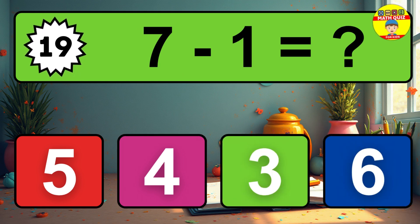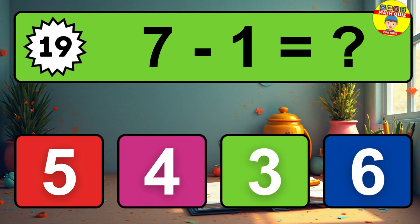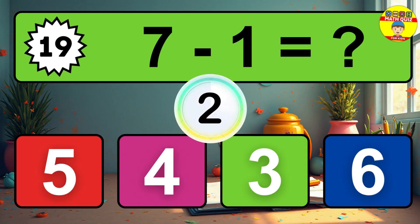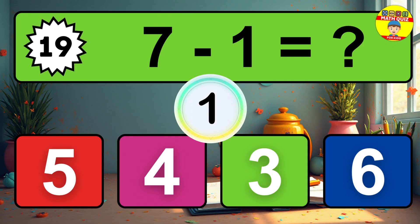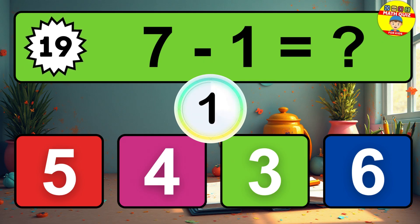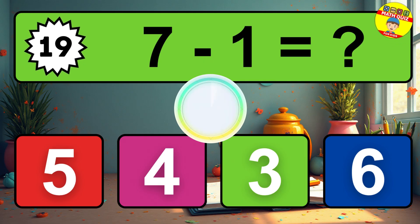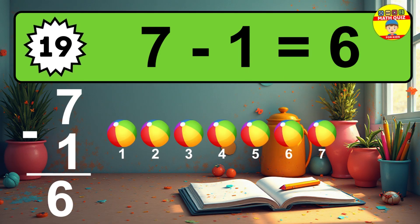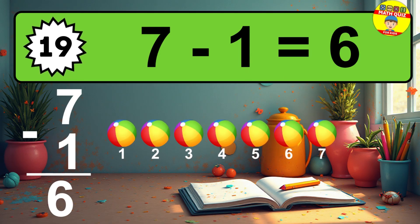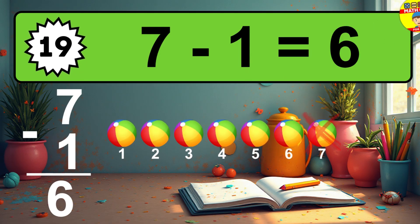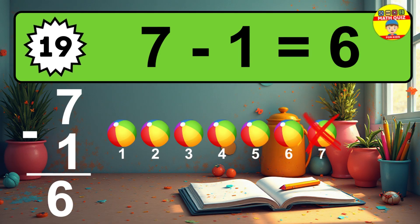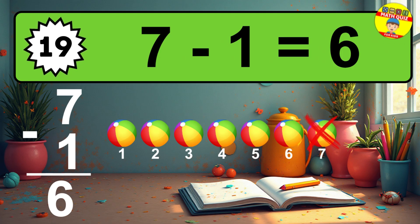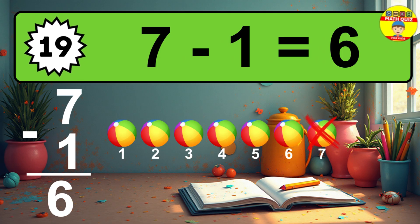Question 19. 7 minus 1 equals what? So the answer is 7 minus 1 is 6. Let's count it. 1, 2, 3, 4, 5, 6.